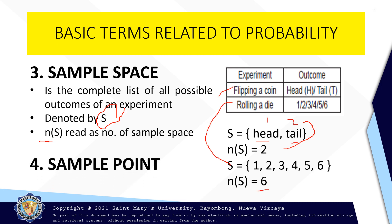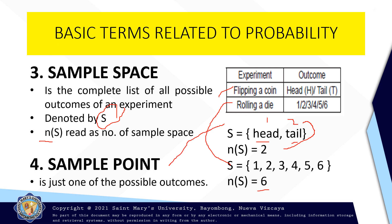We have also the fourth term, which is sample point. Sample point is just one of the possible outcomes. It depends on you — what sample point on the given experiment you want to get. For example, head is one of the sample points of our given experiment in flipping a coin. If you want to get two, this is an example of a sample point in the experiment rolling a die.